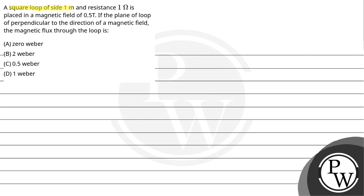Let's read the question. A square loop of side 1 meter and resistance 1 ohm is placed in a magnetic field of 0.5 Tesla. If the plane of the loop is perpendicular to the direction of the magnetic field, the magnetic flux through the loop is: option A, 0 Weber; option B, 2 Weber; option C, 0.5 Weber; option D, 1 Weber.